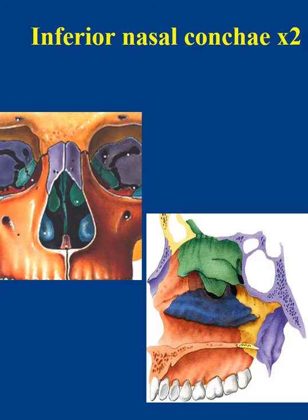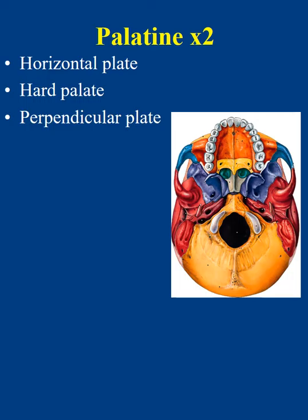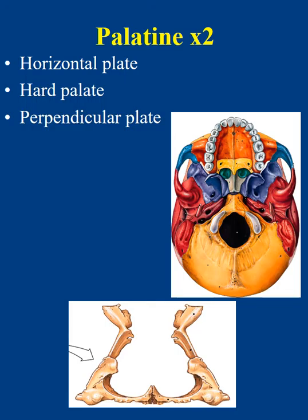The inferior nasal conchae are paired bones located on the inferolateral wall of the nasal cavity, and their purpose is to help create turbulence of inhaled air. The palatine bones are small paired bones with a distinct L-shape that form part of the hard palate, the nasal cavity, and the eye orbit. The posterior one-third of the hard palate is formed by the horizontal plate of the palatine bones, while the anterior two-thirds is created by the maxilla. The perpendicular plate forms part of the lateral wall of the nasal cavity.